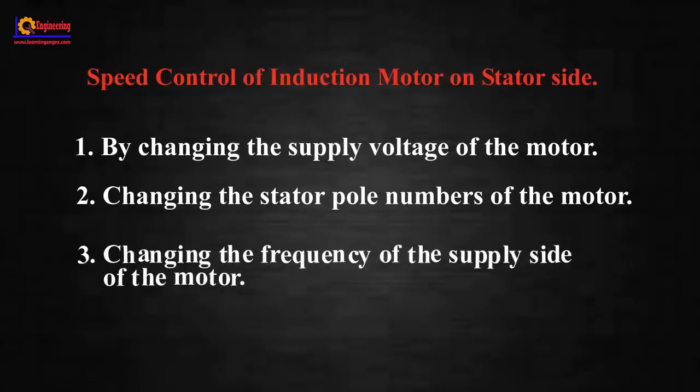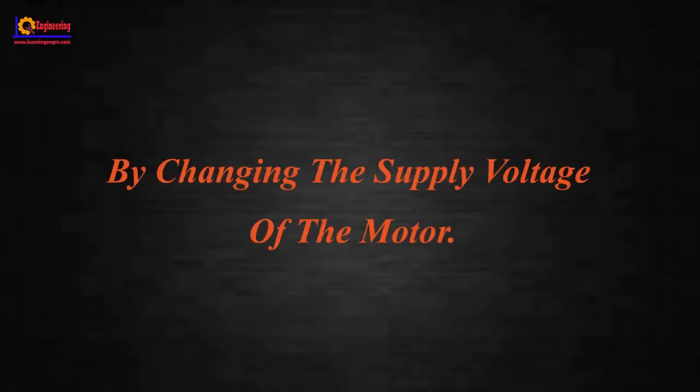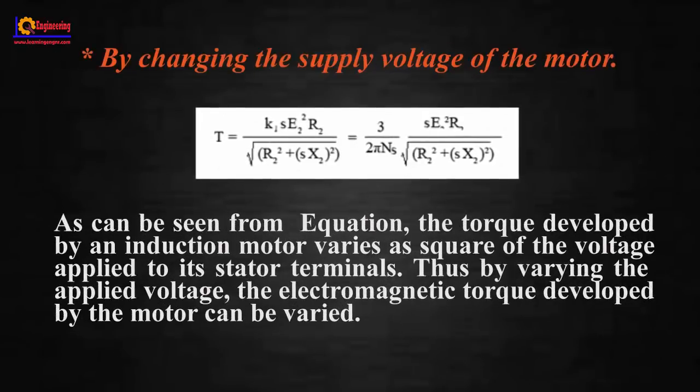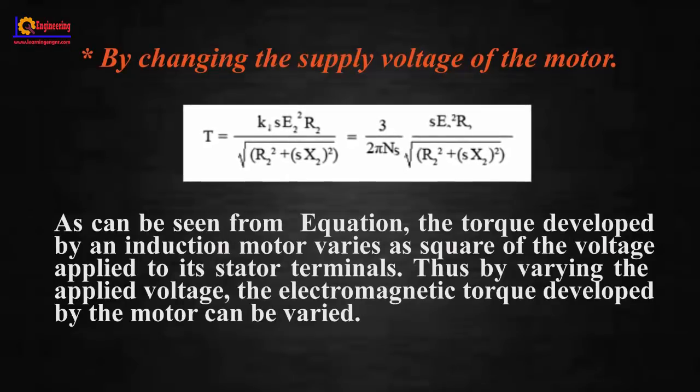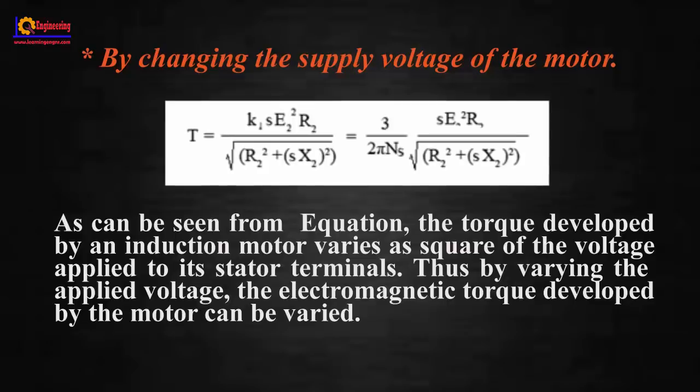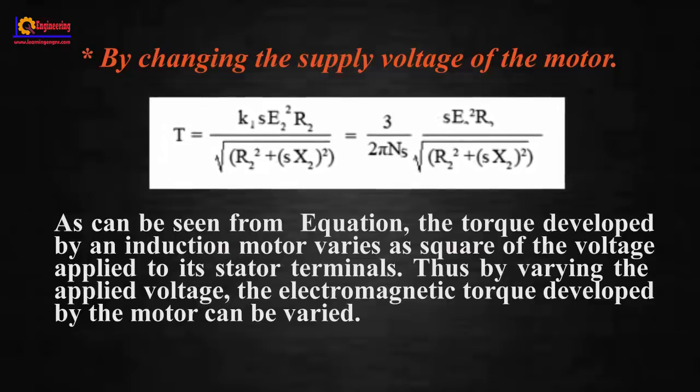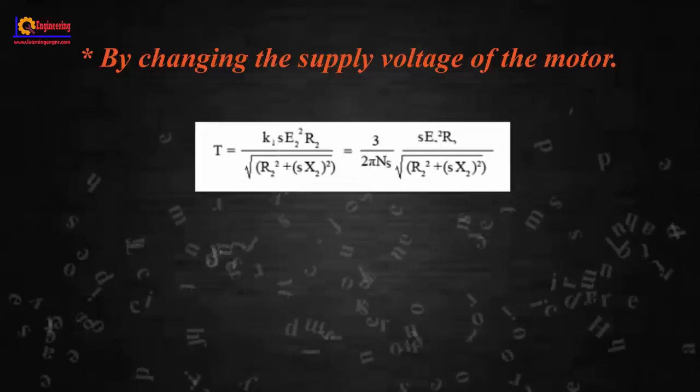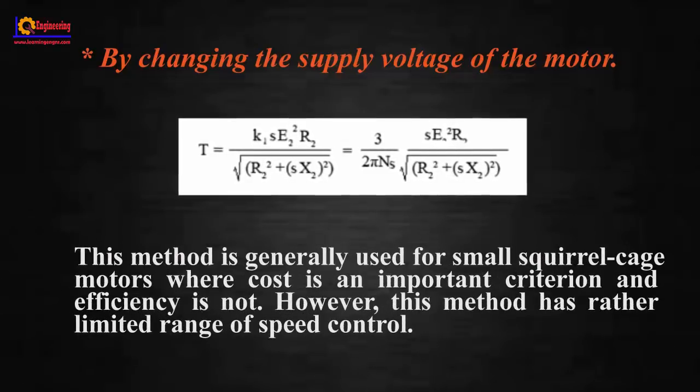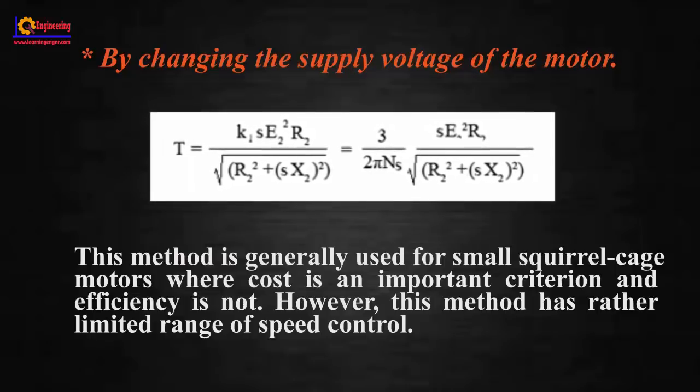By changing the supply voltage of the motor, as can be seen from the equation, the torque developed by an induction motor varies as square of the voltage applied to its stator terminals. Thus by varying the applied voltage, the electromagnetic torque can be varied. This method is generally used for small squirrel cage motors where cost is an important criterion and efficiency is not. However, this method has rather limited range of speed control.